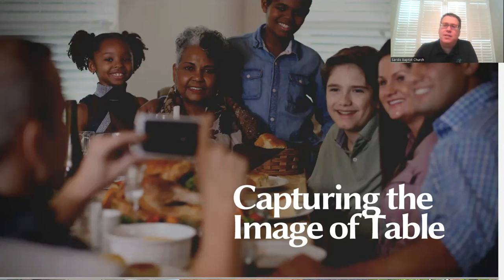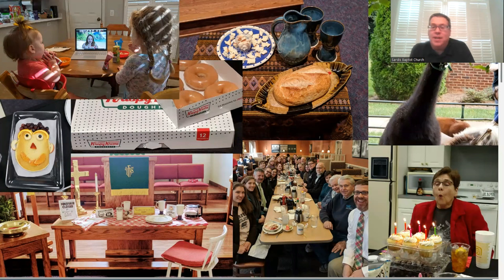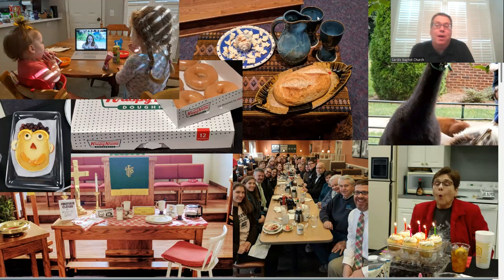Each week as we discuss this idea of table, we start with a visual mood board — just a sample of the different kinds of tables that you might experience in the Sardis community. They range from formal to casual, include all shapes and sizes and all moods, really. And I'm blocking the picture it looks like, but I think my favorite table on here is our llama from an animal blessing in years past, who is enjoying the table of the Sardis grounds and reminds us that table is bigger than just human neighbors.